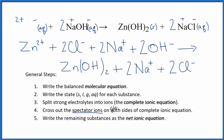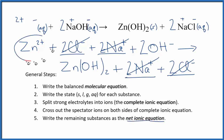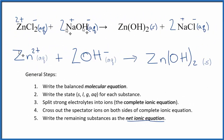Now we can cross out the spectator ions — these are ions that appear on both sides of the equation. Looking for Zn2+, it's in the reactants but not free in the products, since it's bonded to hydroxide. The 2 Cl− ions appear on both sides — cross them out. The 2 sodium ions appear on both sides — cross them out. Everything else is different. This gives us the net ionic equation: Zn2+ + 2 OH− → Zn(OH)2 solid. This is the net ionic equation for zinc chloride plus sodium hydroxide.